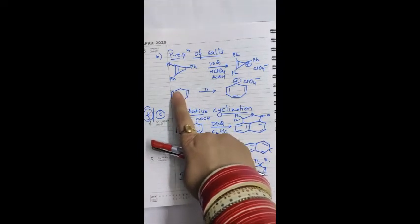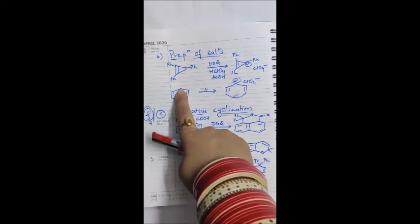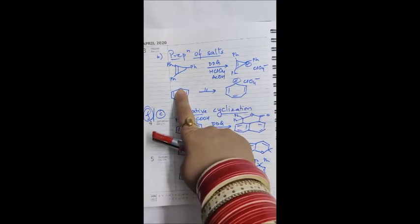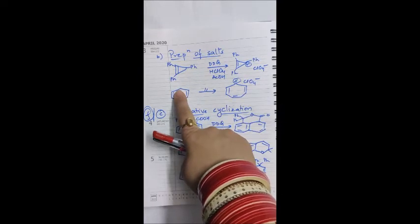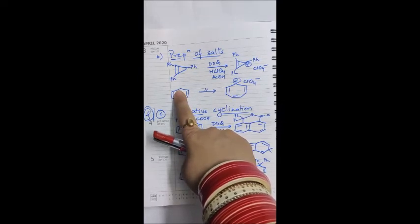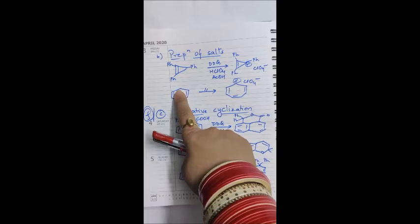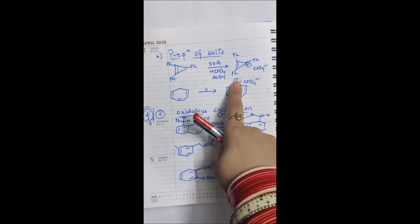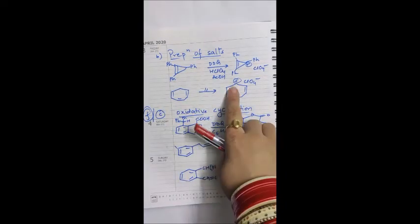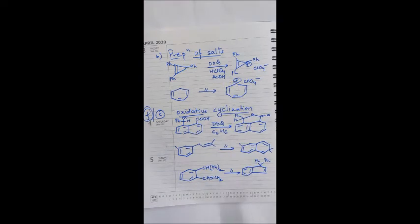HClO4, perchloric acid, is used because these kinds of salts are more stable. For this example molecule, the carbon is sp3-hybridized, so hydride abstraction by DDQ forms a carbocation, and perchloric acid then forms a stable salt with this carbocation. That concludes the second usage of DDQ.